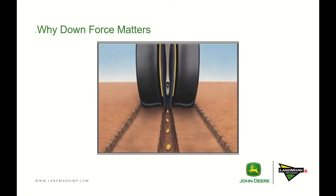Too much downforce could cause excessive wear on our openers, engageable bearings, as well as the shear rivets on the hub. But most importantly, it will cause compaction of the seed trench sidewalls, resulting in poor root growth — not allowing those roots to get to the nutrients that they need, or forcing them to work really hard to find it.